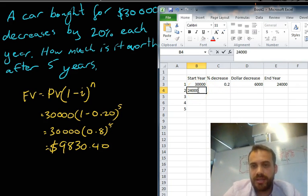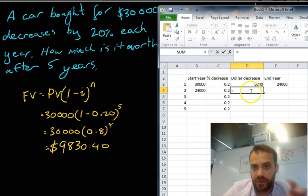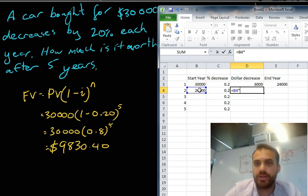Now, at the start of the second year, it's worth $24,000. We're still going to get the same percentage decrease every year. Now, the dollar decrease, you'll notice, is going to change.